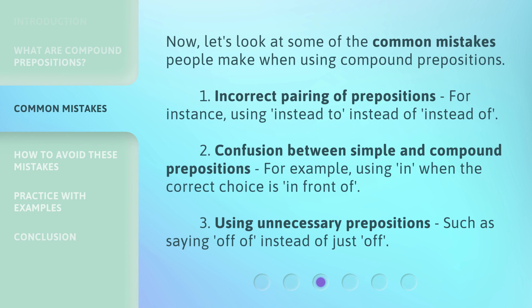Now, let's look at some of the common mistakes people make when using compound prepositions. 1. Incorrect pairing of prepositions — for instance, using 'instead to' instead of 'instead of.' 2. Confusion between simple and compound prepositions — for example, using 'in' when the correct choice is 'in front of.' 3. Using unnecessary prepositions, such as saying 'off of' instead of just 'off.'